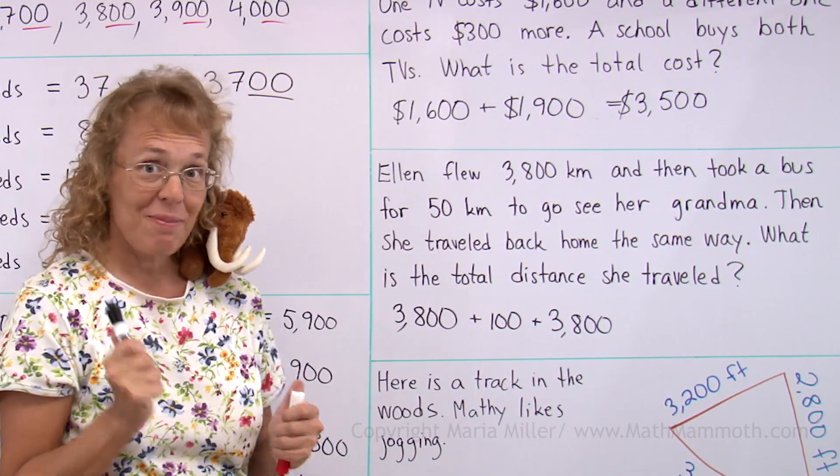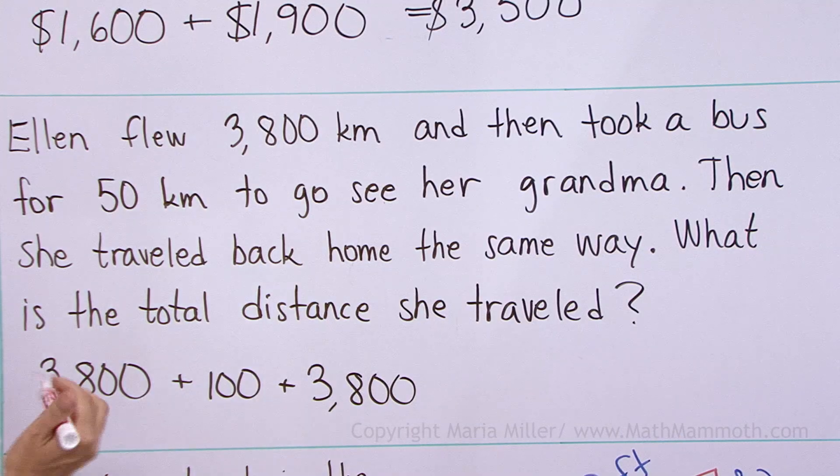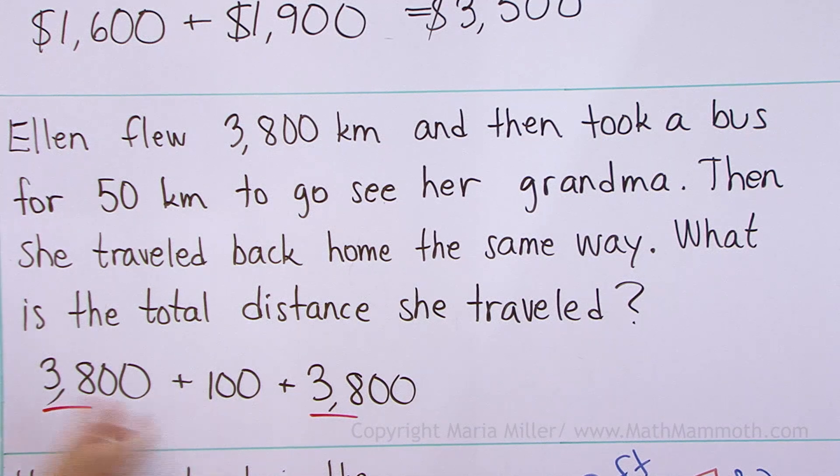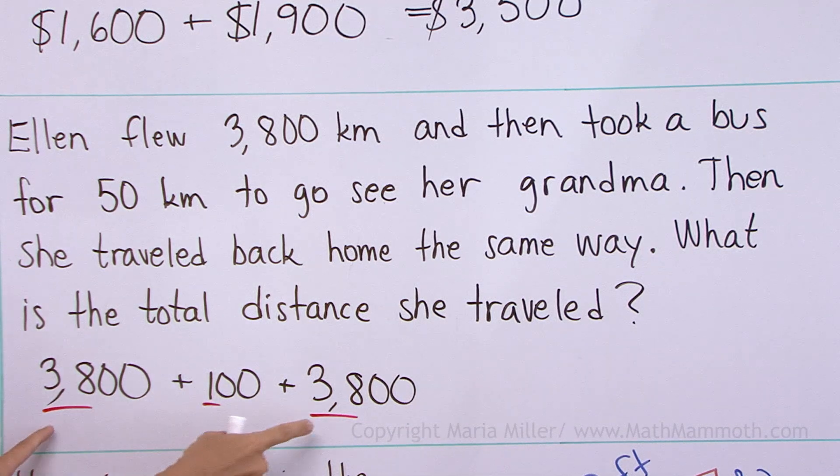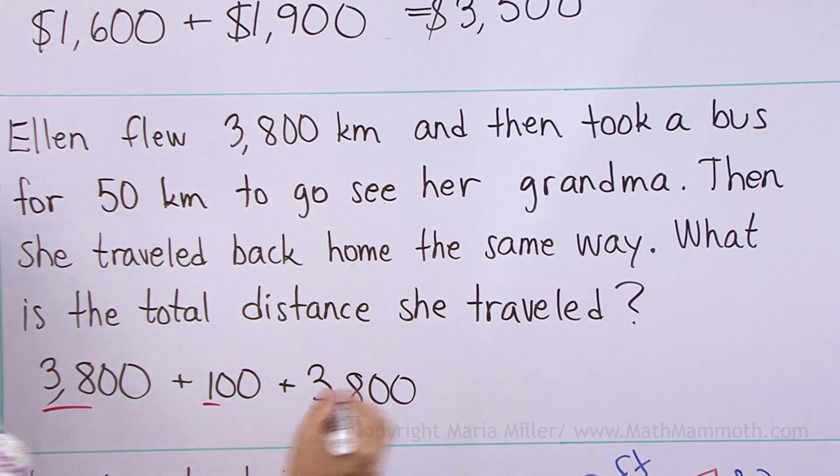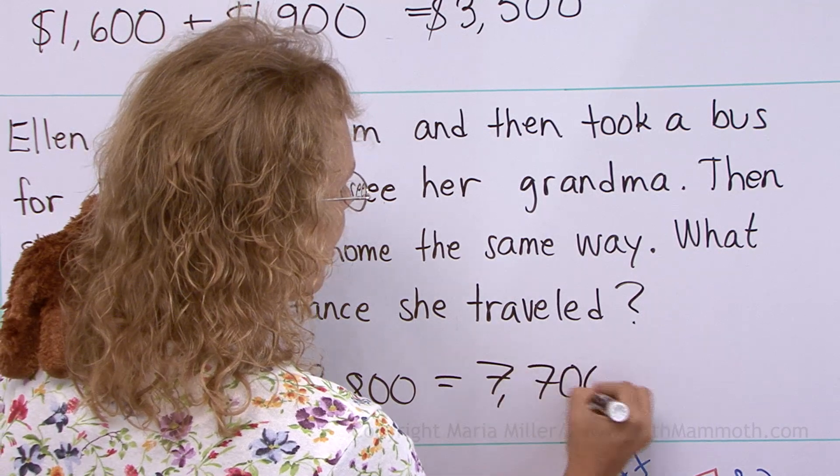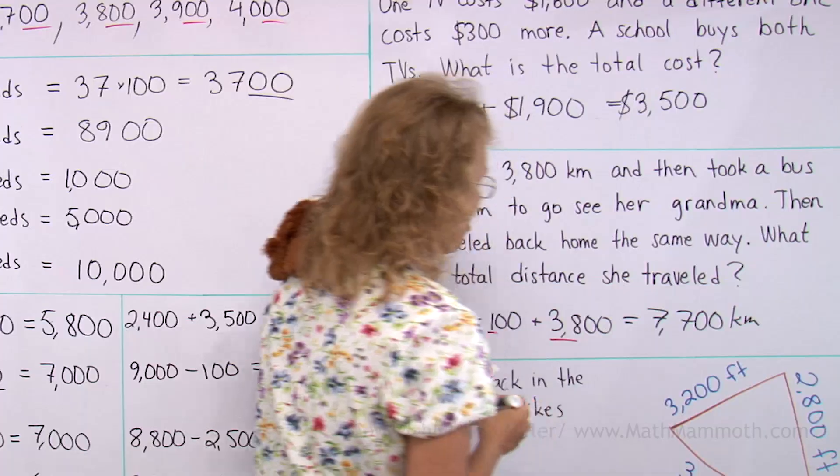Can we do this mentally? We have basically 38 and 38 and then 1. 38 and 38, you would get 60 and 16. That's 76 and 1. 77. So 7,700 kilometers. So that's a bunch of traveling.